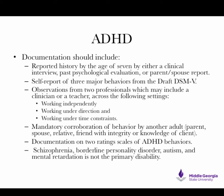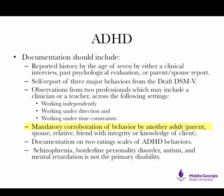ADHD documentation should include reported history by the age of 7, established by either a clinical interview, past psychological evaluation, or parent or spouse report. A self-report of three major behaviors from the DSM-5 is required. Observations from two professionals — which may include a clinician or a teacher — across the following settings: working independently, working under direction, and working under time constraints. Mandatory corroboration of behavior by another adult such as a parent, spouse, relative, or friend with integrity or knowledge of the client is also required.